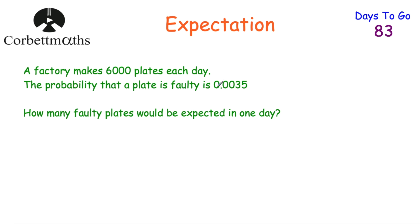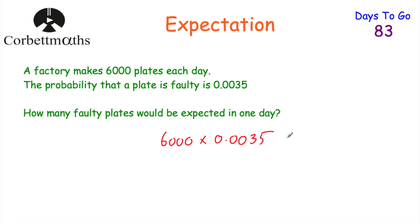We can also use probabilities to find how many times we expect something to happen. A factory makes 6,000 plates a day, and the probability that a plate is faulty is 0.0035. To find the expected number of faulty plates, multiply the number of trials by the probability: 6,000 multiplied by 0.0035 equals 21. So we'd expect 21 faulty plates in one day.